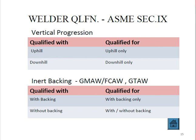Vertical progression: if a welder is qualified for uphill, they are qualified for uphill only; downhill qualification covers downhill only. For inert backing with GMAW and FCAW: if qualified with backing, the welder is qualified with backing only. If qualified without backing, the welder is qualified for both with and without backing.